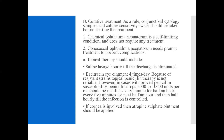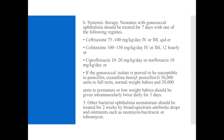If the cornea is involved, atropine sulfate ointment should be applied. For systemic therapy, neonatal gonococcal ophthalmia should be treated for seven days with one of the following regimens: ceftriaxone 75–100 mg/kg/day IV or IM once daily, or cefotaxime 100–150 mg/kg/day IV or IM 12-hourly, or ciprofloxacin 10–20 mg/kg/day, or norfloxacin 10 mg/kg/day. If the gonococcal isolate is proven susceptible to penicillin, crystalline benzyl penicillin G 50,000 units for full-term normal-weight babies and 20,000 units for premature or low-weight babies should be given intramuscularly twice daily for three days. Other bacterial ophthalmia neonatorum should be treated for two weeks by broad-spectrum antibiotic drops and ointments such as neomycin, bacitracin, or tobramycin.